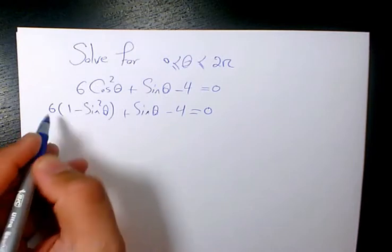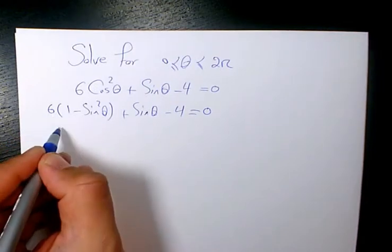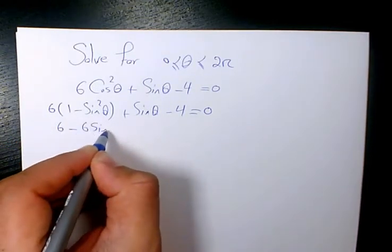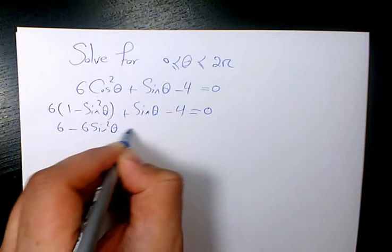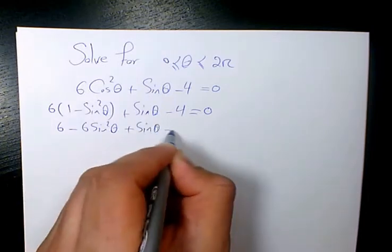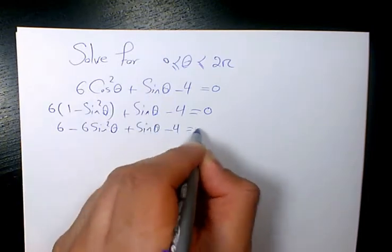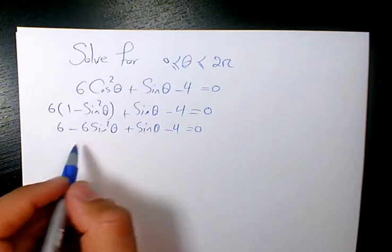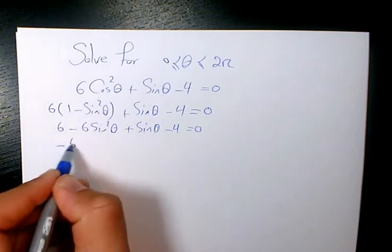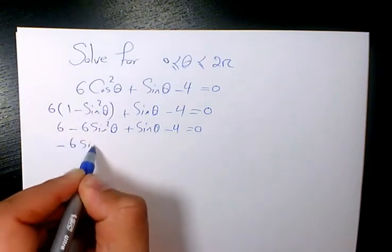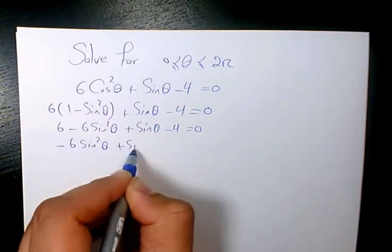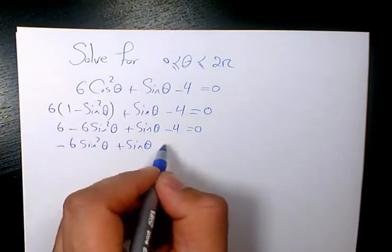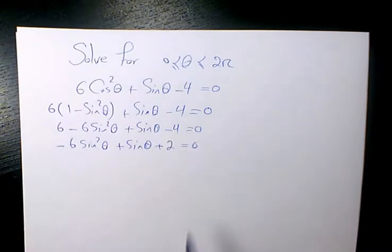Then I distribute it: 6 times 1 is 6, and 6 times negative sine squared theta, plus sine theta minus 4 equals to 0. Now I rearrange it: negative 6 sine squared theta plus sine theta, and 6 minus 4 gives plus 2, equals to 0.